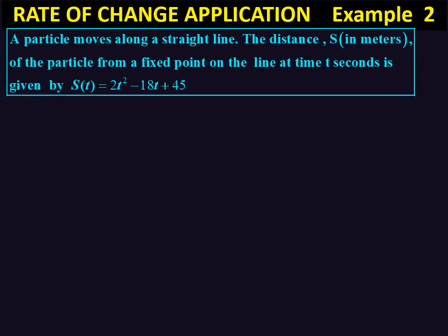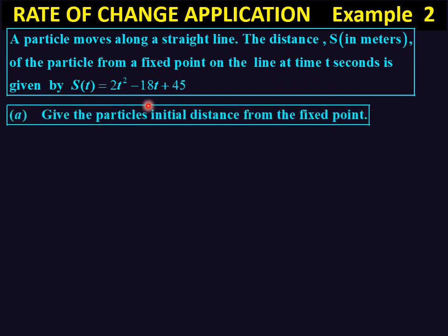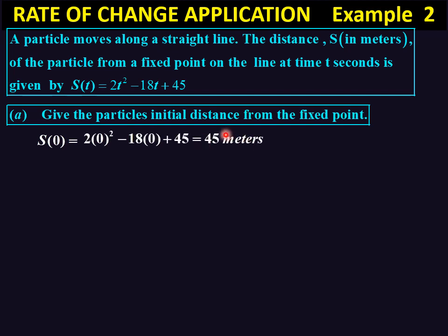Let's take a second example. A particle moves along a straight line. The distance s in meters from a fixed point at time t seconds is given by a formula. First question: give the particle's initial distance from the fixed point. Initial means the start, so time is zero. We substitute t equal to 0 into s(t), giving s(0) equal to 45 meters.